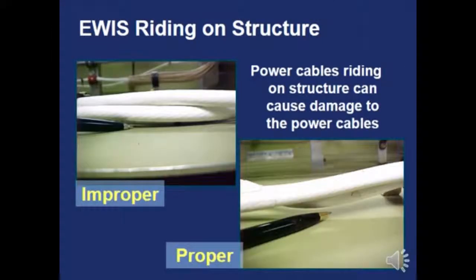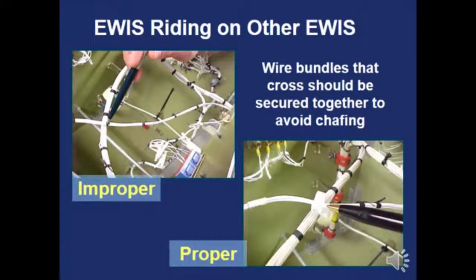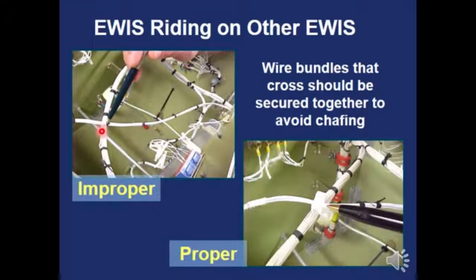EWIS riding on structures is improper — make sure wires are lifted away from the structure. When EWIS wires cross over each other, they need to be tightly secured together. If there's any vibration, unsecured wires will flap back and forth onto each other, causing chafing. When tied together, they'll move as one unit and avoid any chafing.